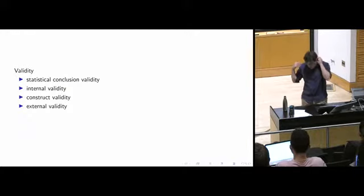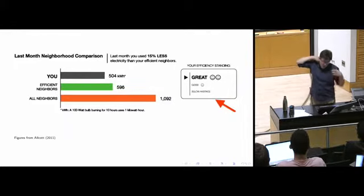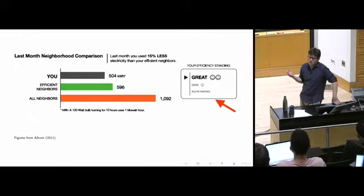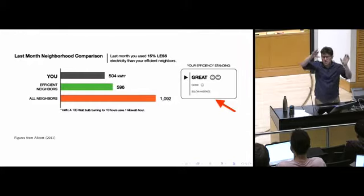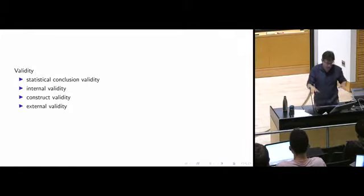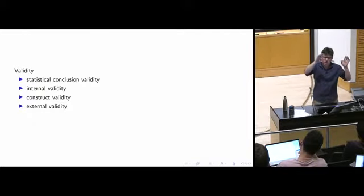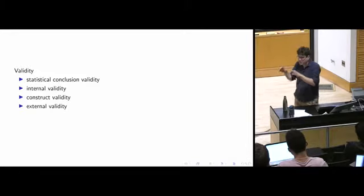Construct validity is an important idea — is the treatment really operationalizing your theoretical construct? This is often very hard and makes the most sense in understanding experiments. If you're just finding the shade of blue that maximizes click-throughs, there's no real construct validity issue. But if your experiment is designed to yield understanding, you have to make sure what you're doing and your theories are linked correctly. I like to go back and forth between the abstract description and what the person actually did — if they feel very different, that's a sign of a construct validity problem.